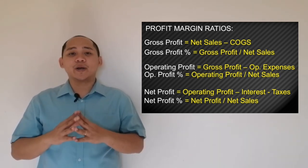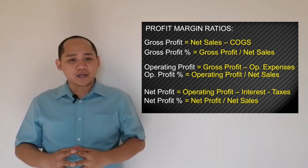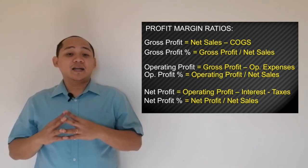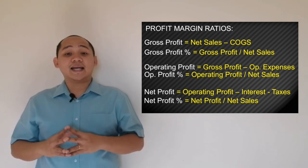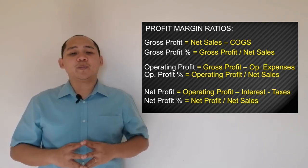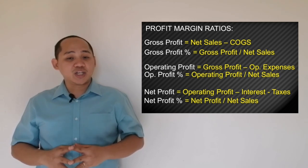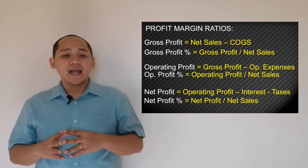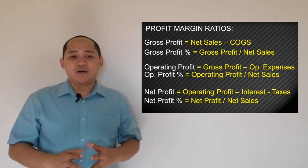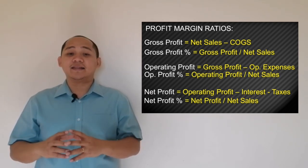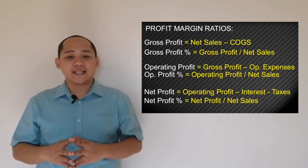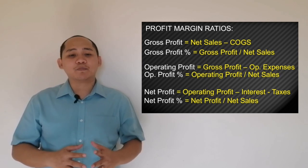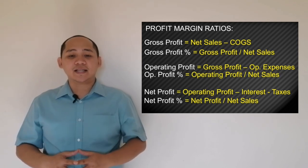For operating profit margin, the formula is operating profit divided by net sales. This is called operating margin because it represents the percentage of sales left after covering the additional operating expenses.